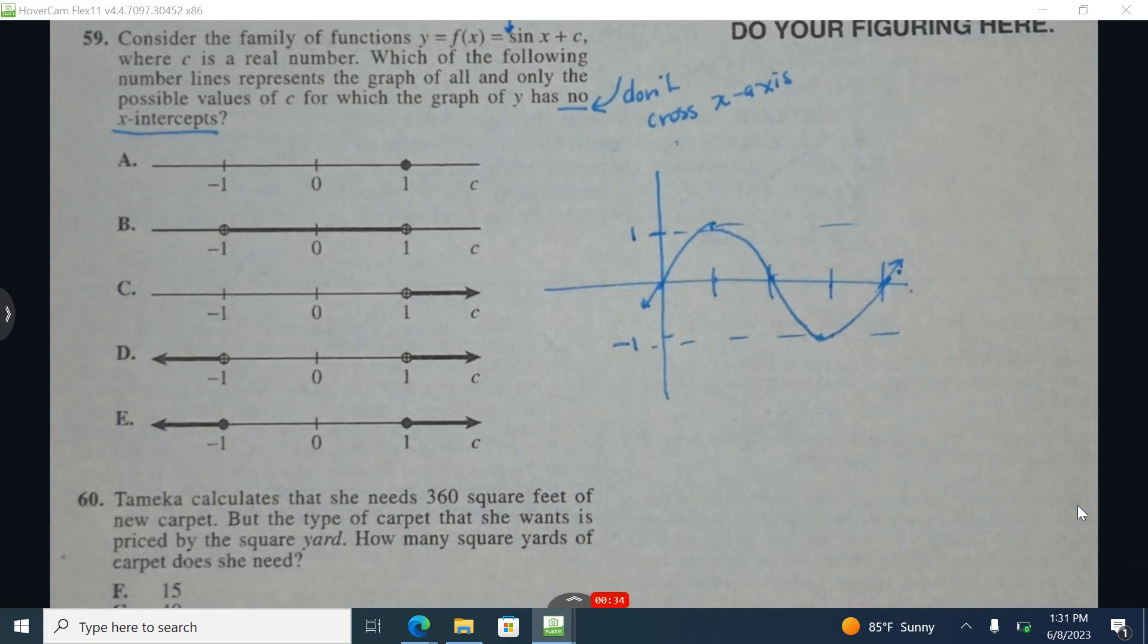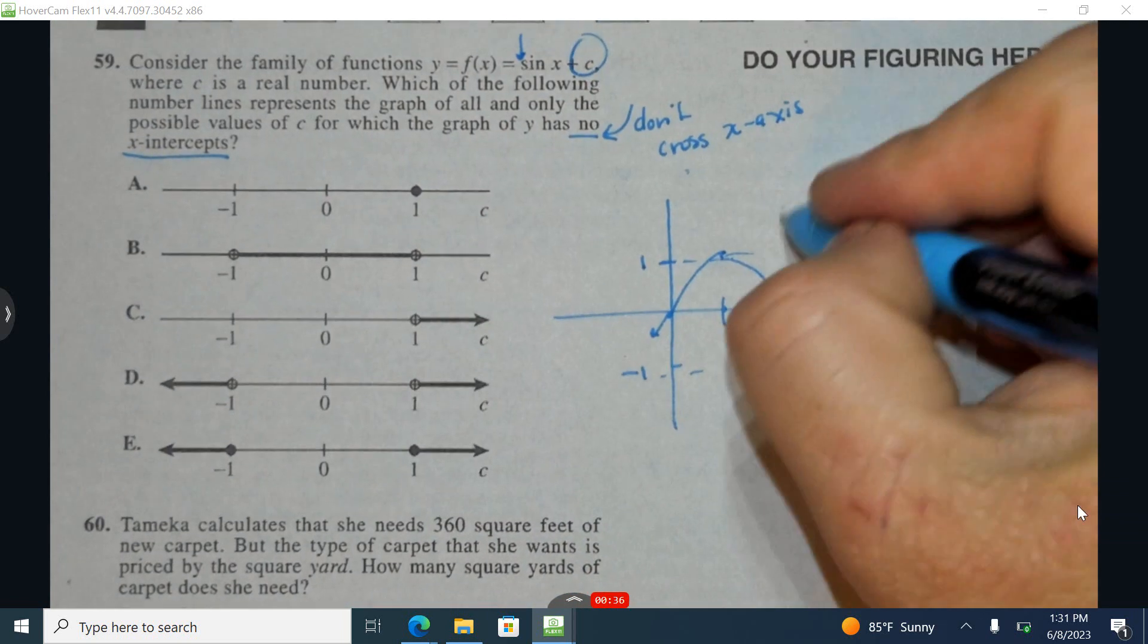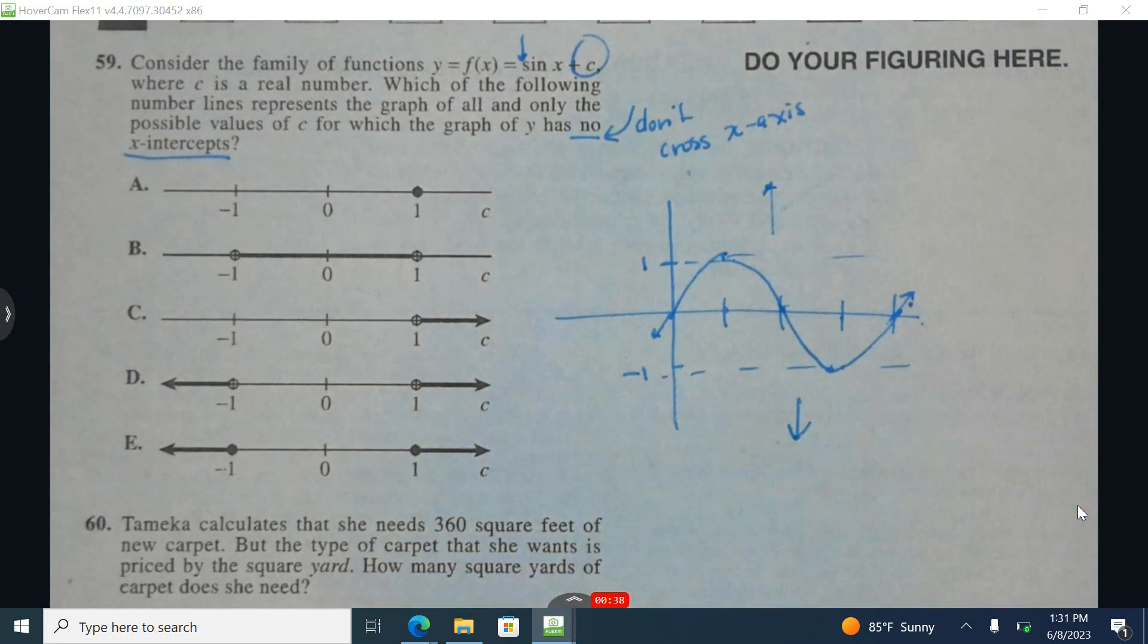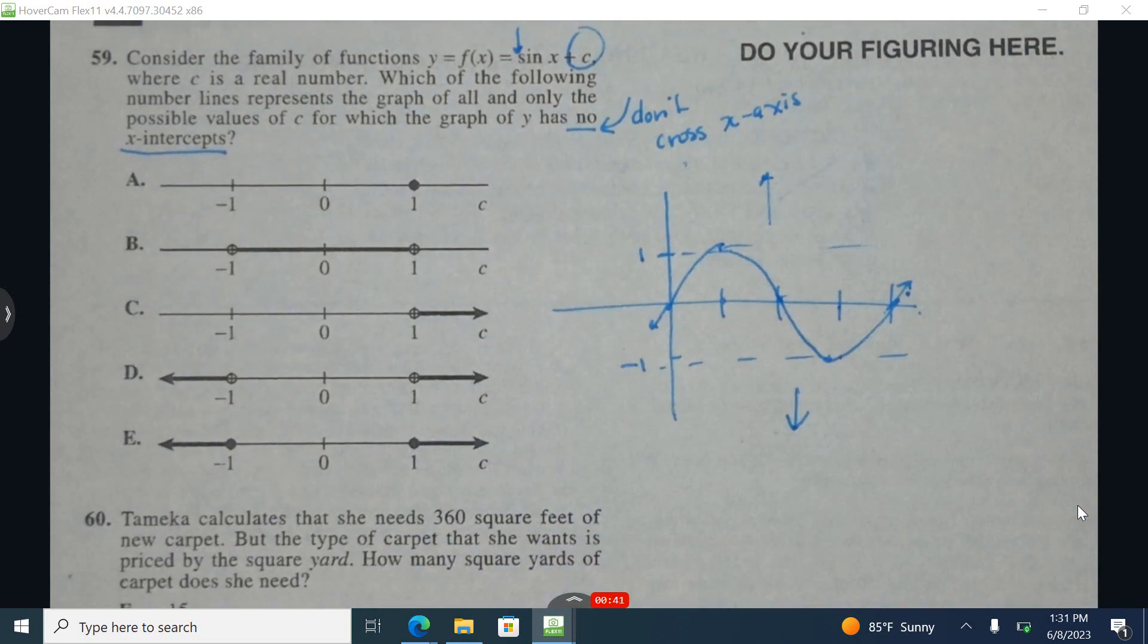Now we can take this entire curve and vertically shift it up or down based on the value of c. If c is positive, we shift everything up. If c is negative, we shift everything down.